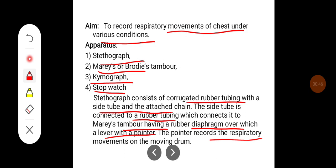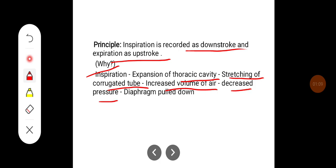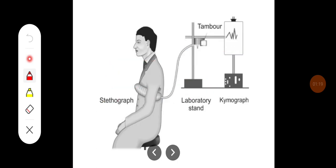The pointer records the respiratory movements on the moving drum. Inspiration is recorded as a downstroke and expiration is recorded as an upstroke. When you inspire, there will be expansion of the thoracic cavity and stretching of the corrugated rubber tube, which increases the volume of air but decreases the pressure in the corrugated rubber tube. As a result, the diaphragm of Marey's chamber is pulled down.